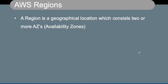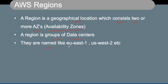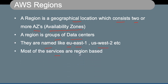An AWS region is a geographic location consisting of two or more availability zones. Some regions can have two AZs and some can have up to six. A region is a group of multiple data centers, and regions are typically named like us-east-1 or eu-west-2. Most AWS services are region-based, however there are some global services as well.